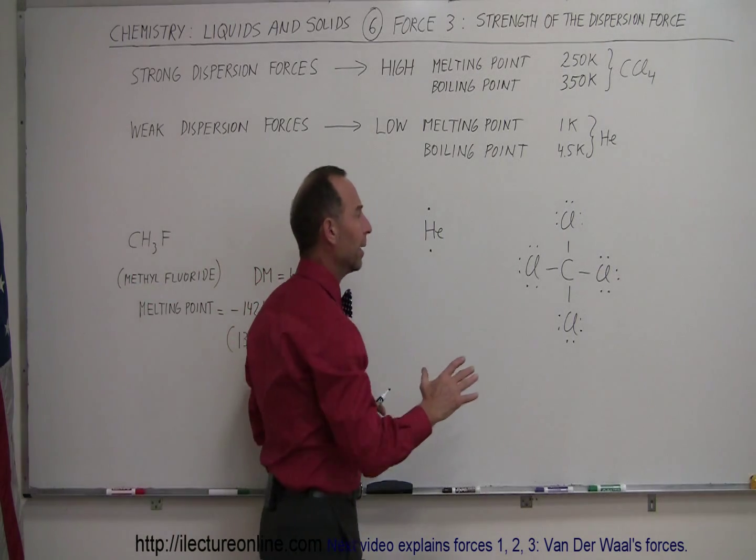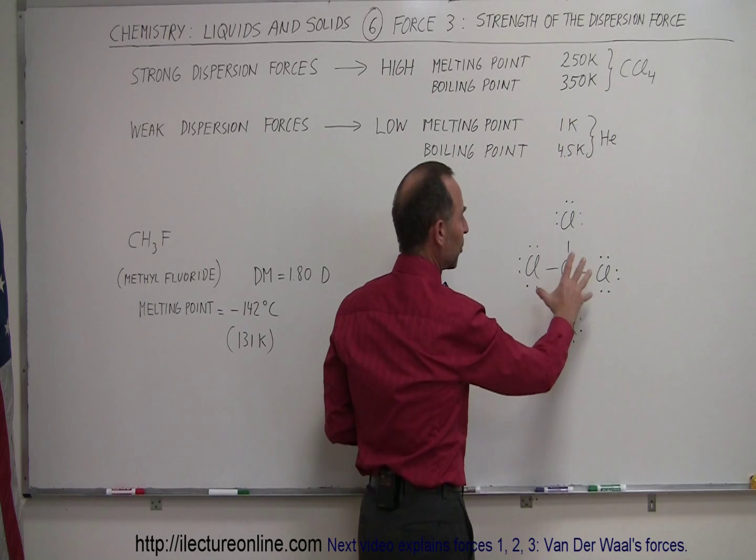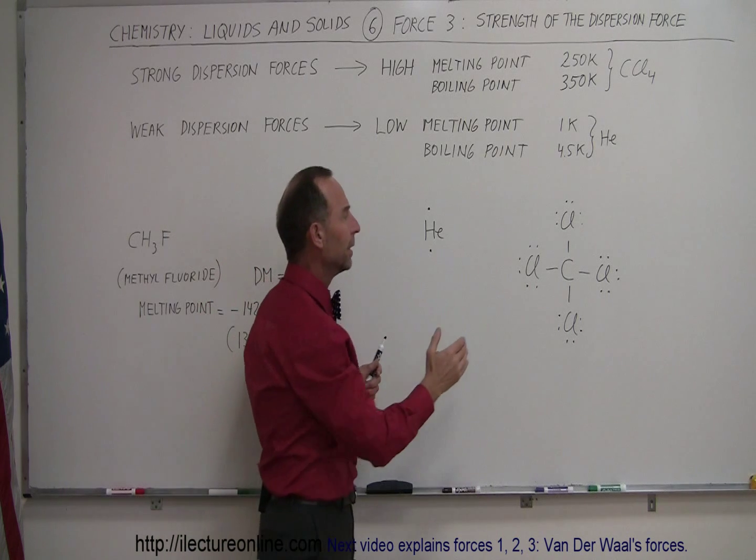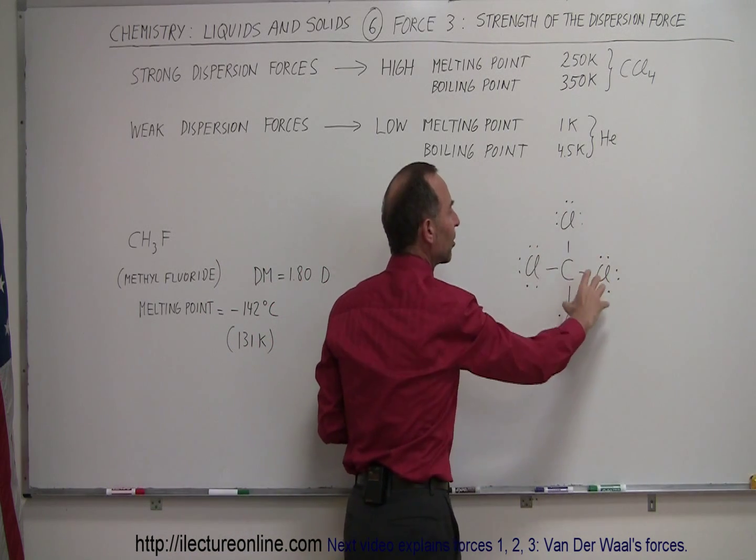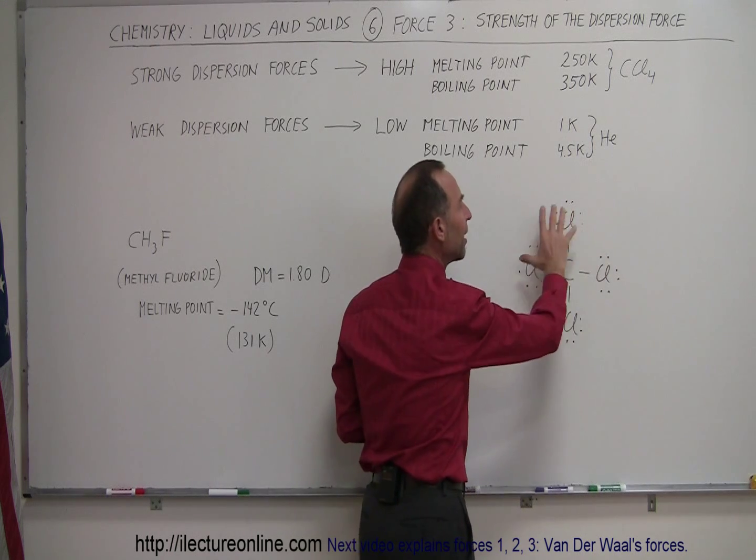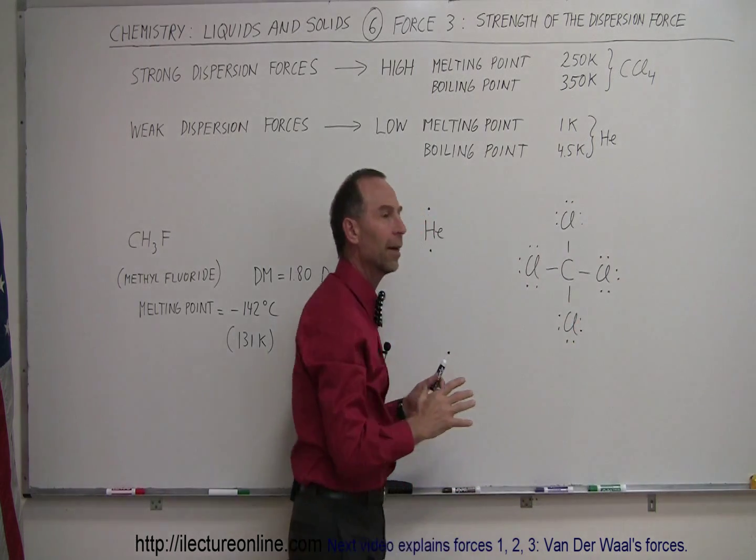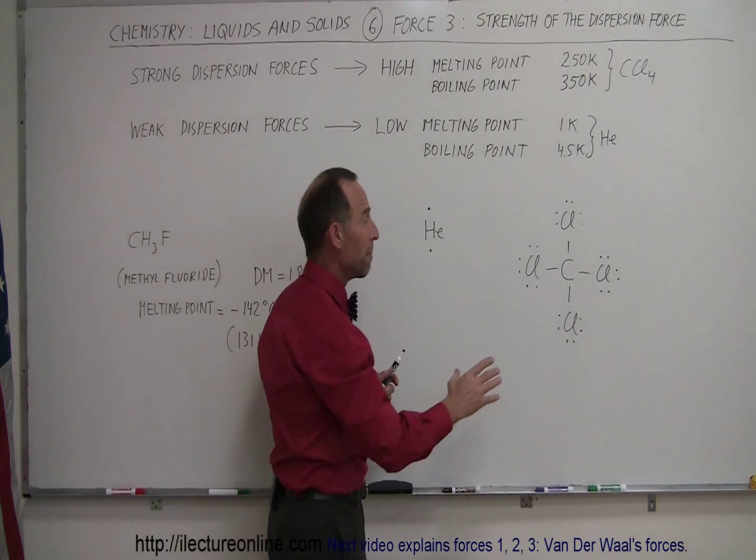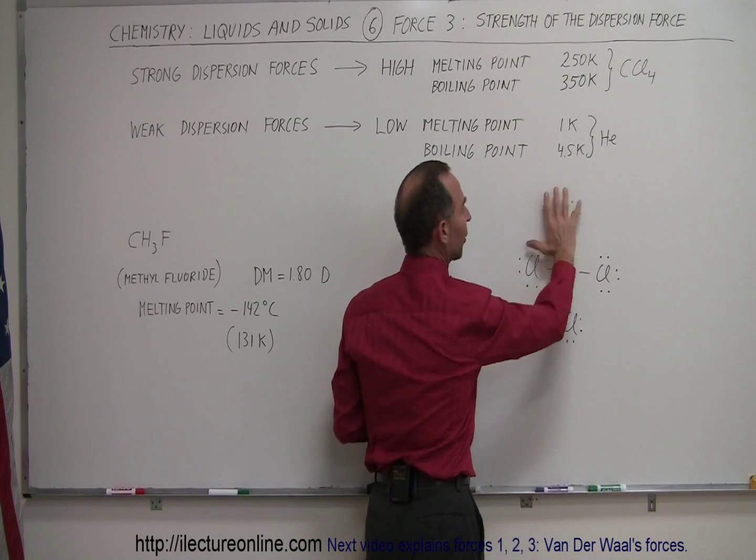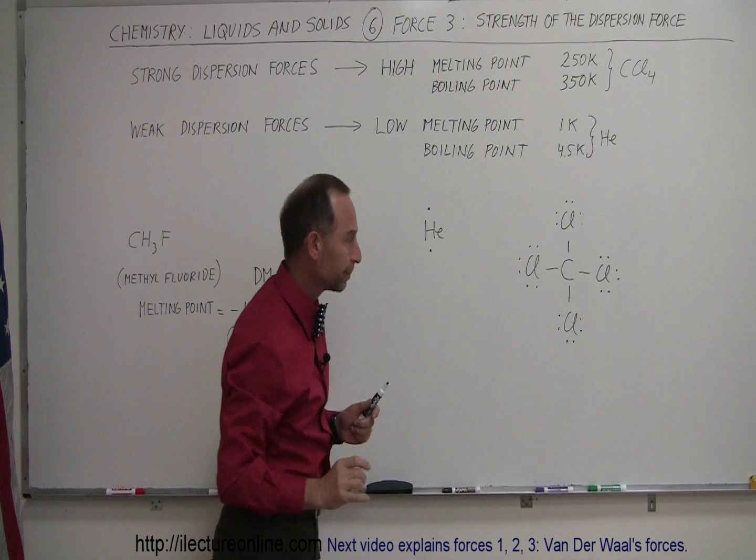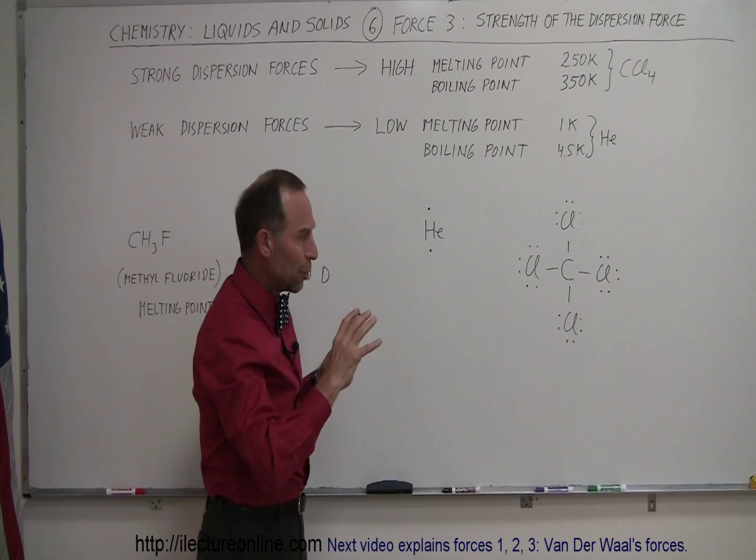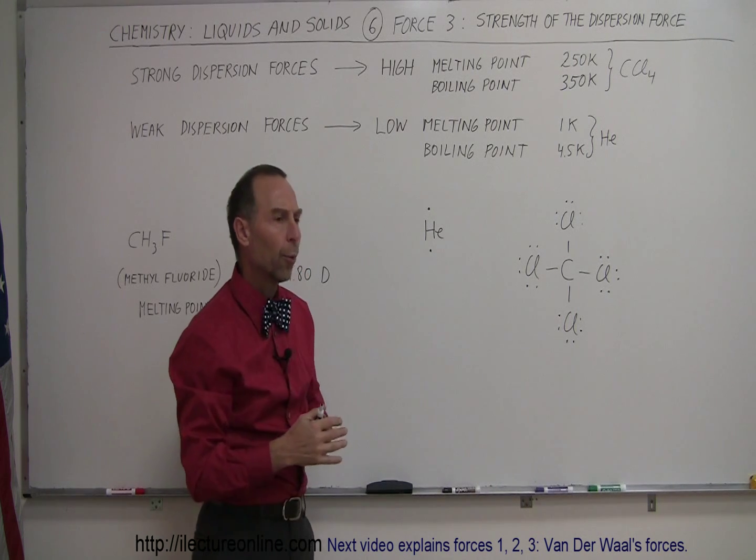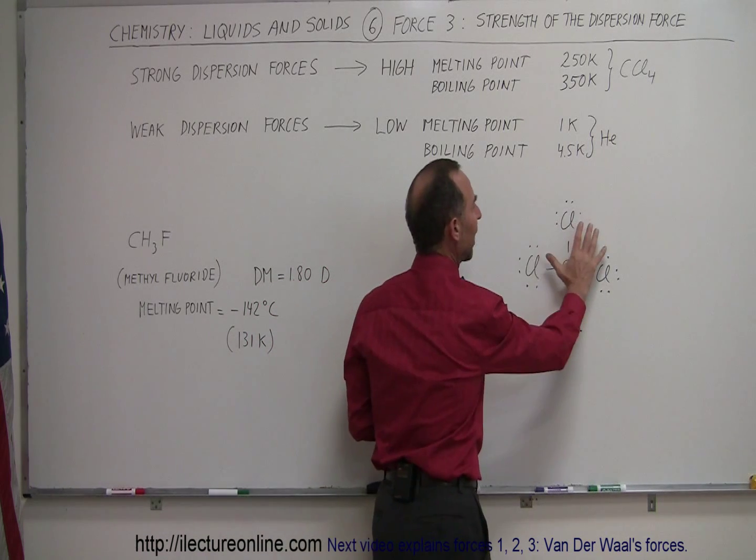But the reason why there are dispersion forces between the molecules when you put a bunch together is because these electrons are not going to be in the exact same position. They're whirling around and there's variation in how the electron density is distributed from one moment to the next. These changes in electron density, paired with the fact that carbon tetrachloride is a very large molecule compared to helium, means you can have situations where the electron density is very much away from the total symmetry expected.